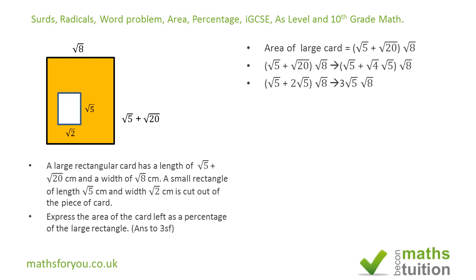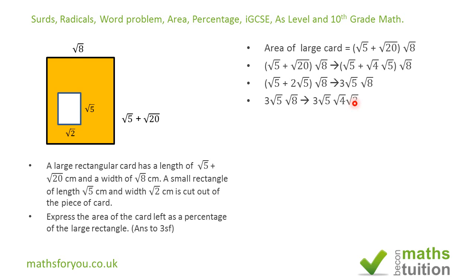Next we simplify √8 step by step. √8 is the same as √4 × √2, because 4 × 2 = 8. The square root of 4 is 2, so √8 becomes 2√2.